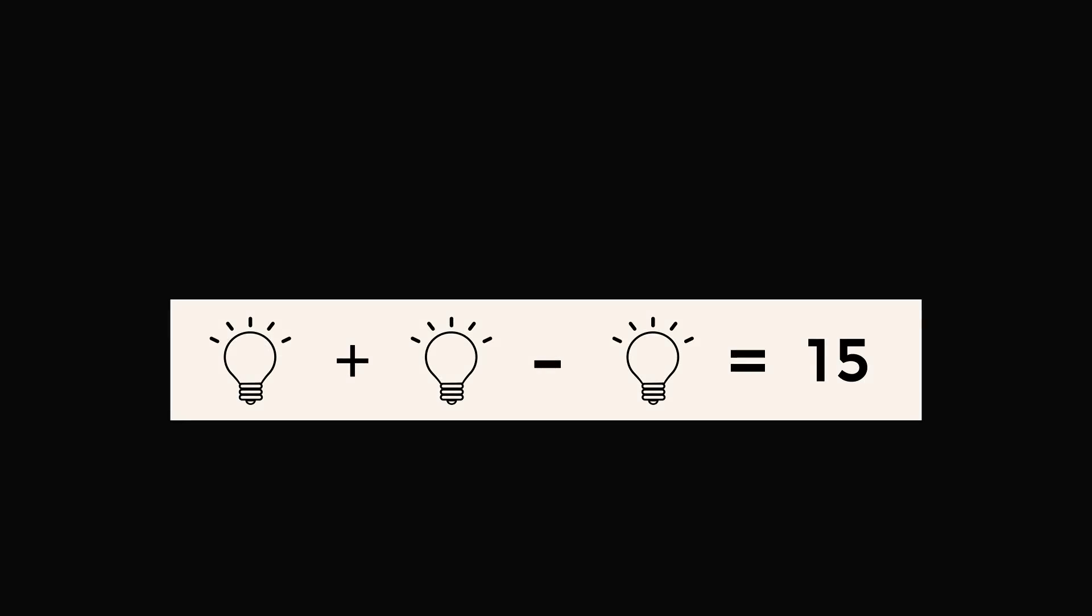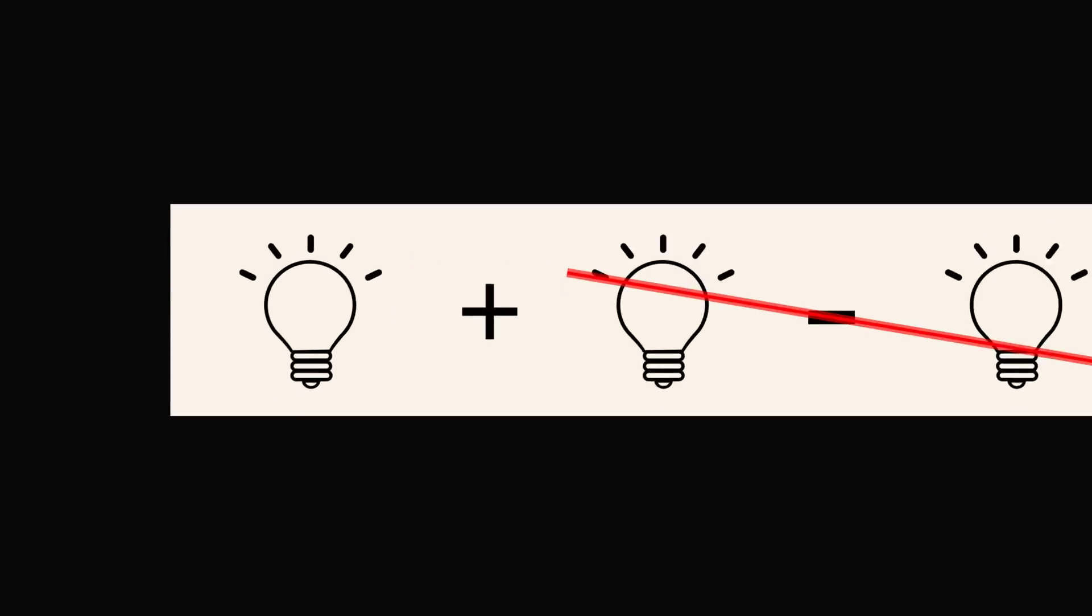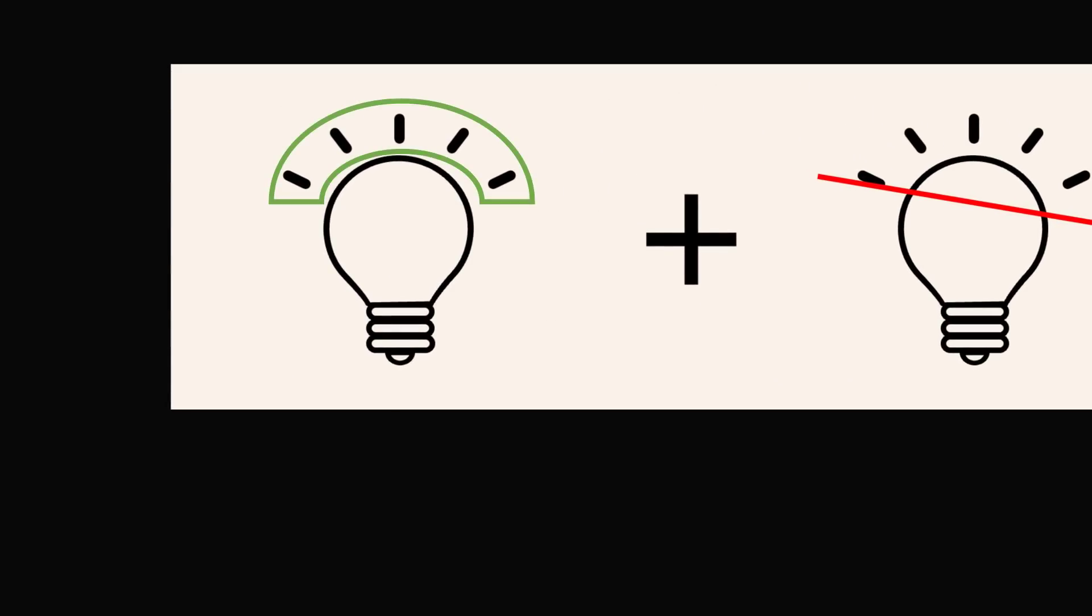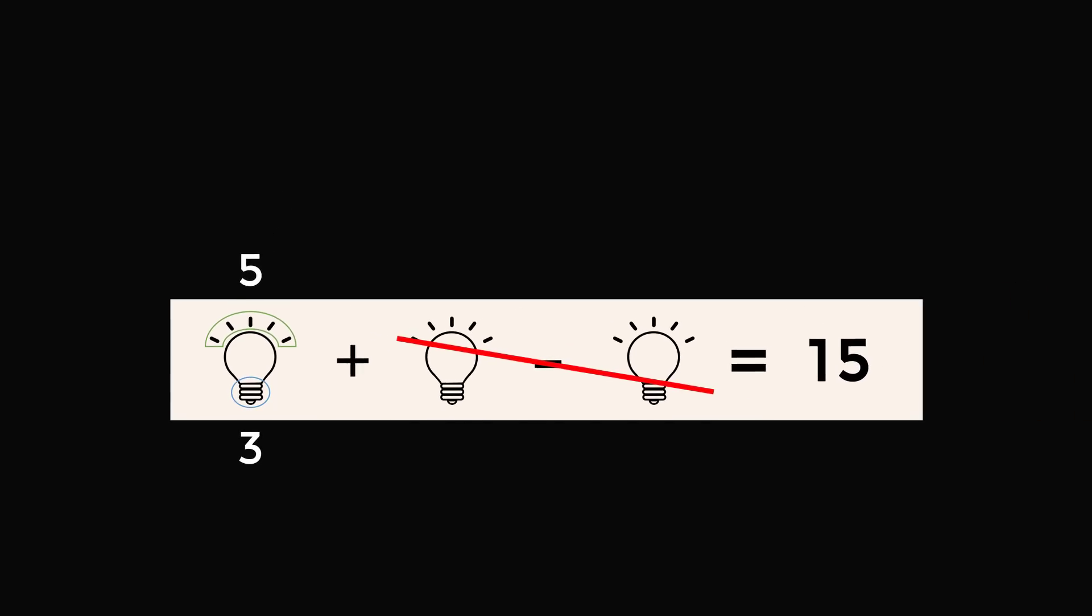We now proceed to the third line. So we have lightbulb plus lightbulb minus lightbulb is equal to 15. So it's reasonable that lightbulb minus lightbulb will cancel out. So it would be reasonable to think the value of a single lightbulb is equal to 15. But let's look at the details on the lightbulb. So if we zoom in, we will notice that this lightbulb has 5 rays that are emanating from it and it has 3 different threads that are showing. So we have the numbers 5 and 3 associated with this depiction of a lightbulb. So if we zoom back, we have that the value has to be equal to 15. Now we have the numbers 5 and 3, and they combine in a way that 5 times 3 is equal to 15. So it seems reasonable that the value of a lightbulb is equal to the product of the number of rays and the number of threads.